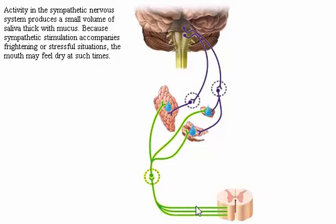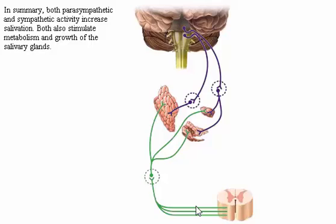Activity in the sympathetic nervous system produces a small volume of saliva that is thick with mucus. Because sympathetic stimulation accompanies frightening or stressful situations, the mouth may feel dry at such times. In summary, both parasympathetic and sympathetic activity increase salivation, and both also stimulate metabolism and growth of the salivary glands.